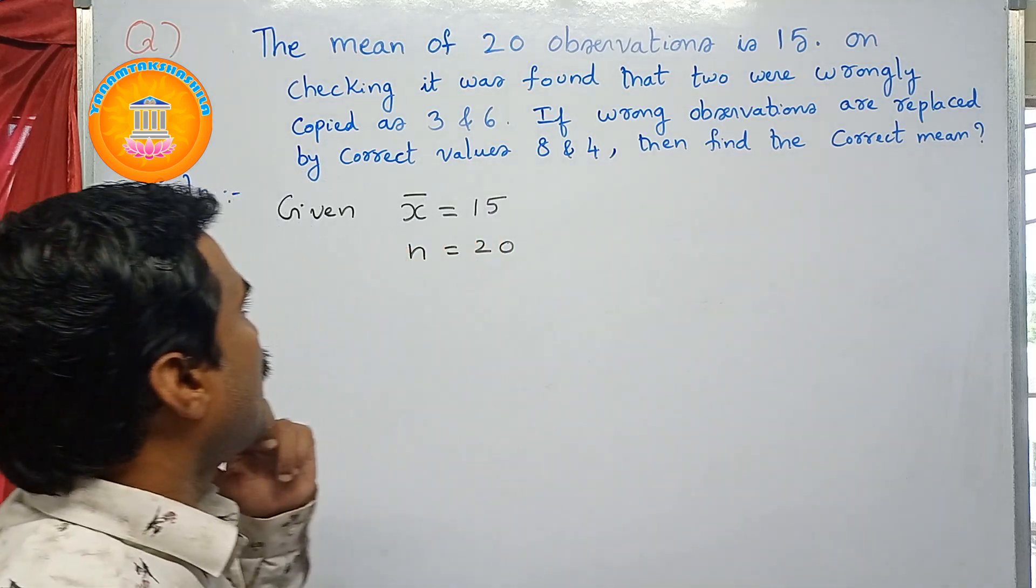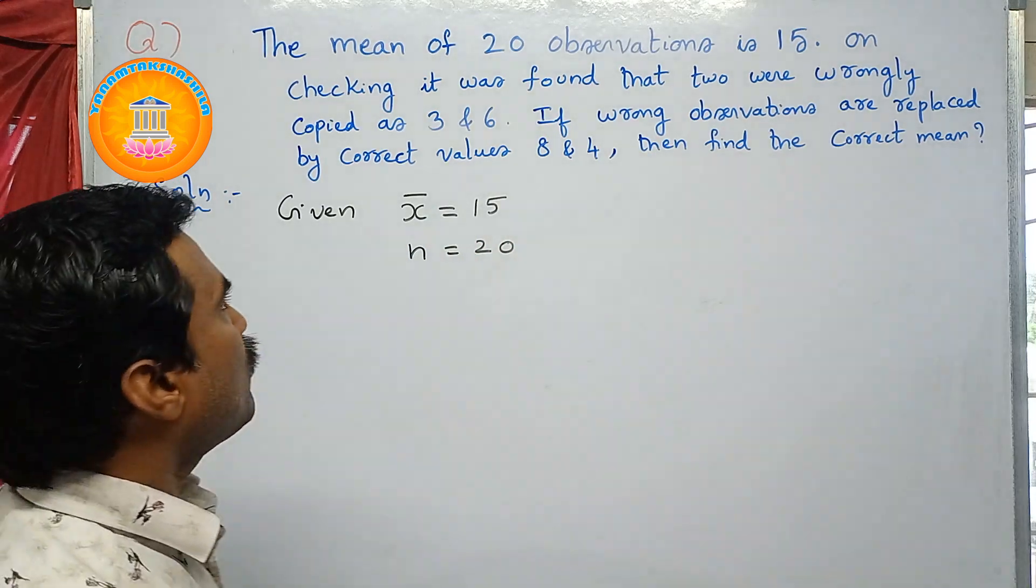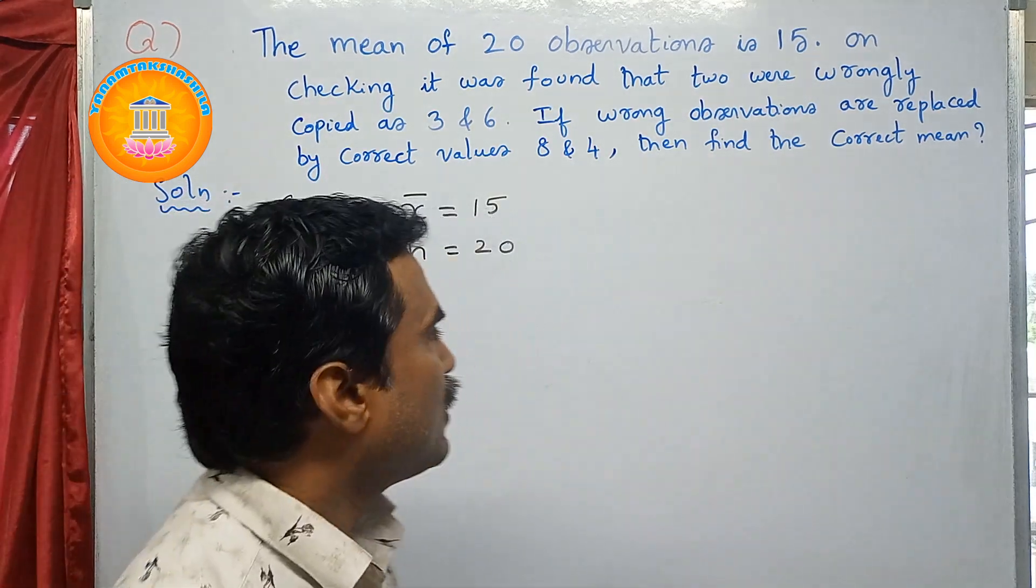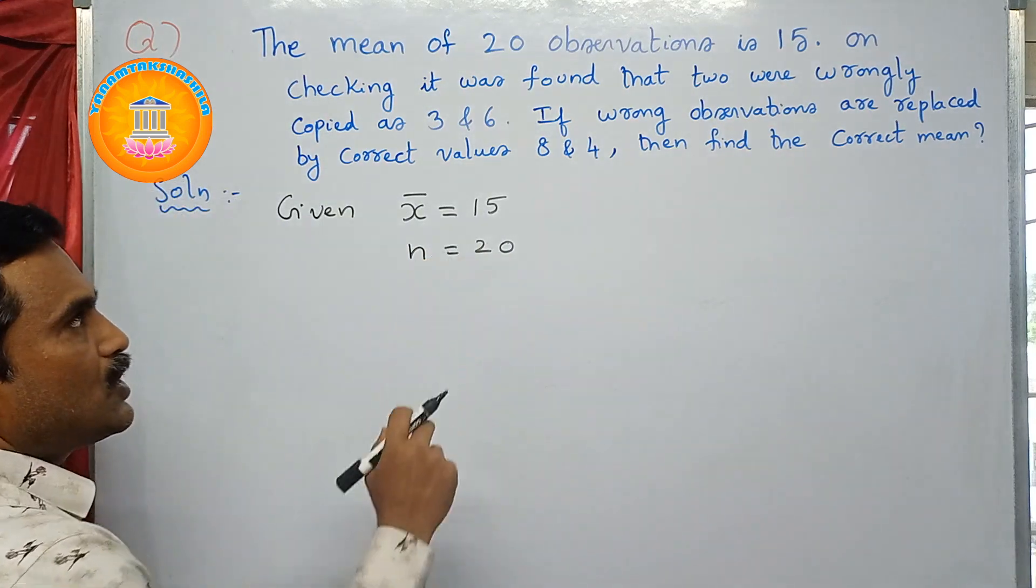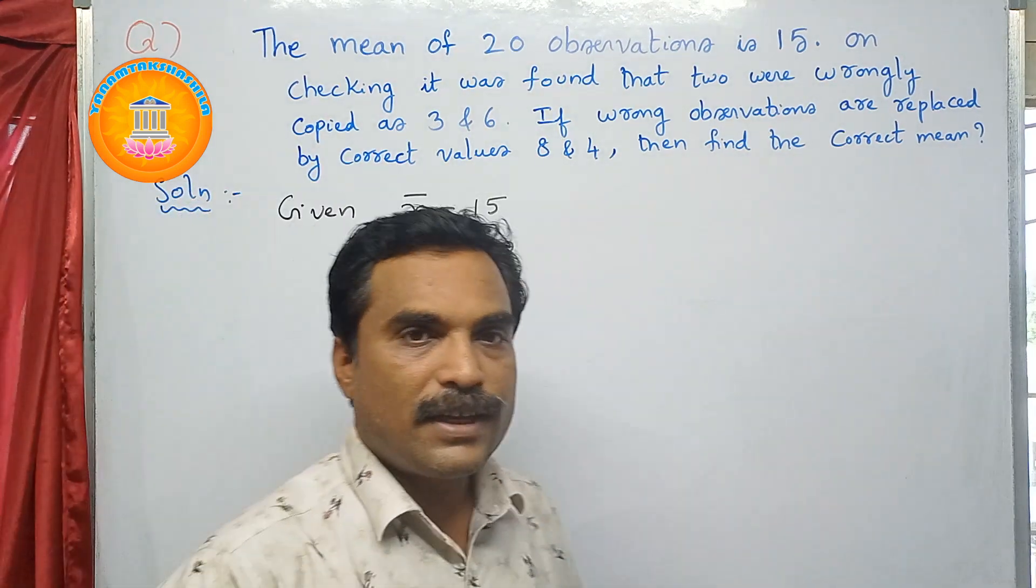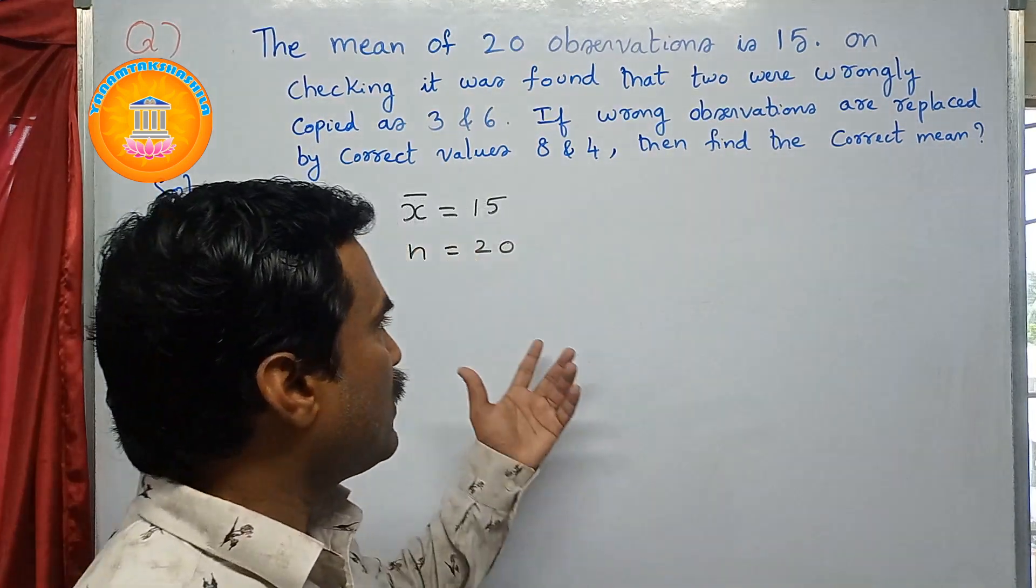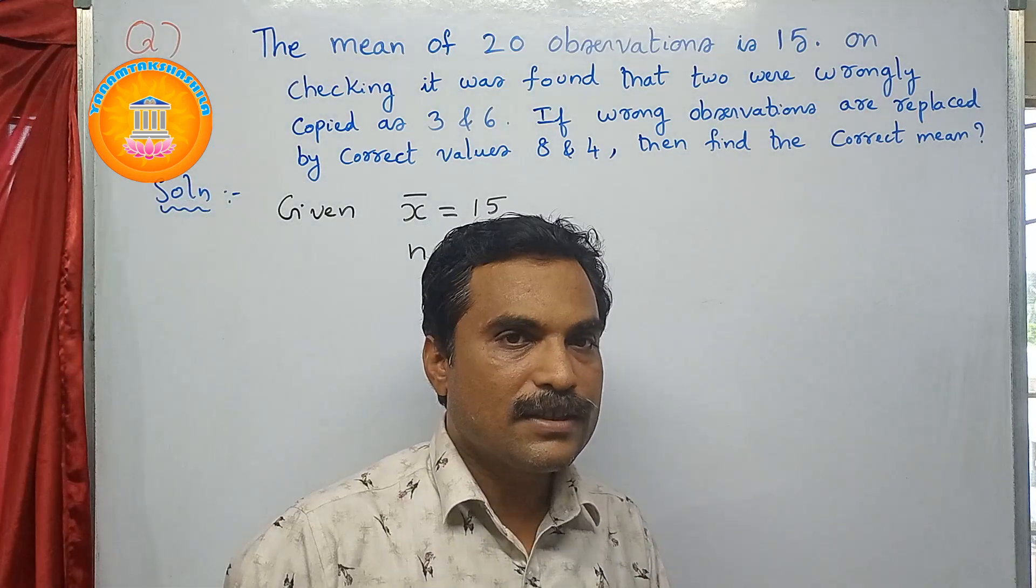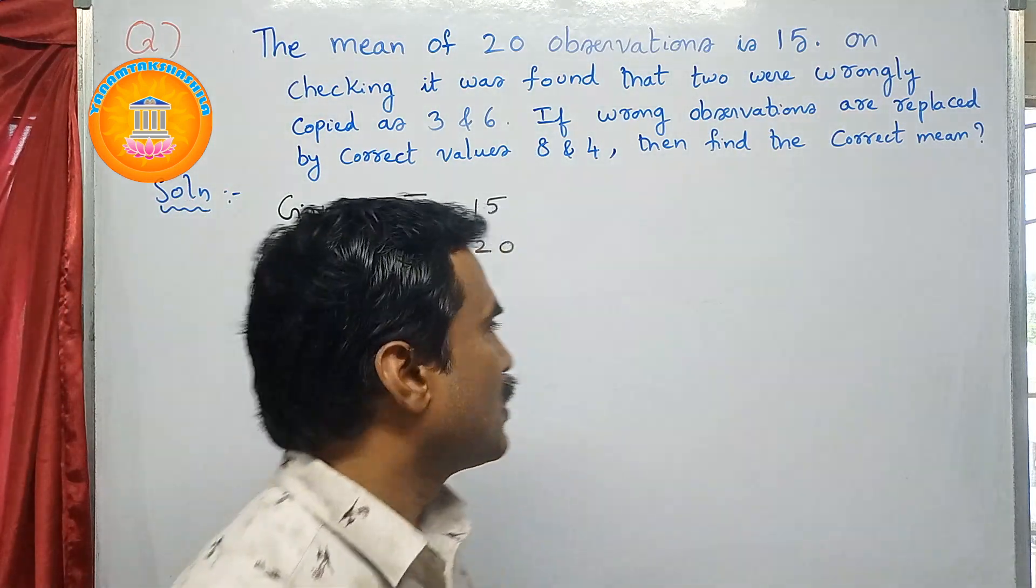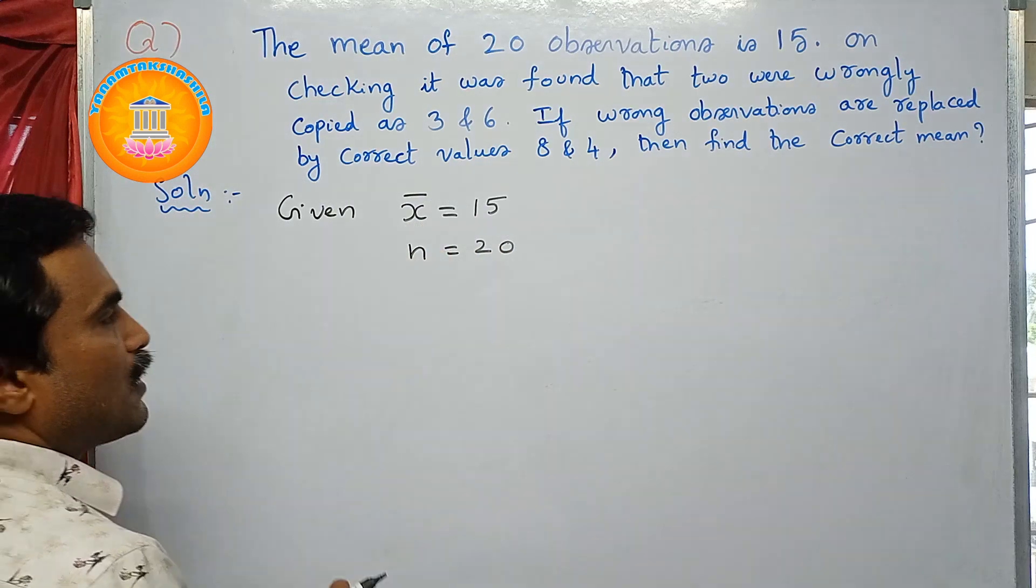Now on checking, it was found that 2 were wrongly copied as 3 and 6. So that means in the number of observations, it was taken as 3 and 6, that you have to minus. So for this, first you need to find the sum of the observations. Just use this x̄ formula, that is mean formula.